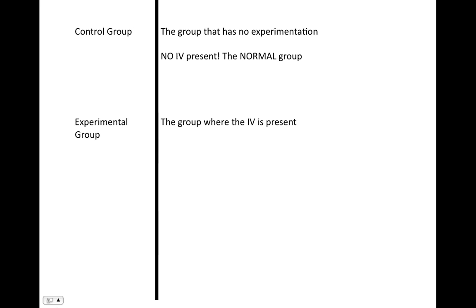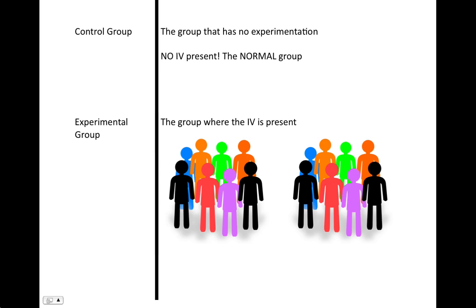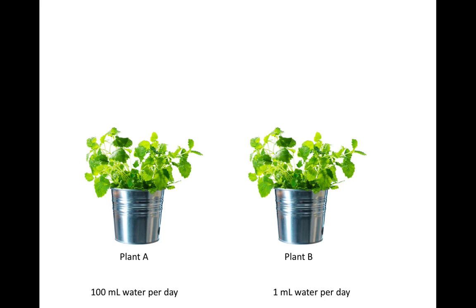For example, there are two groups of people: one that receives a placebo and one that receives a new drug. Which one is the control group and the experimental group? That is correct—the new drug group is the experimental group, whereas the normal group that is not getting anything special is the control group.